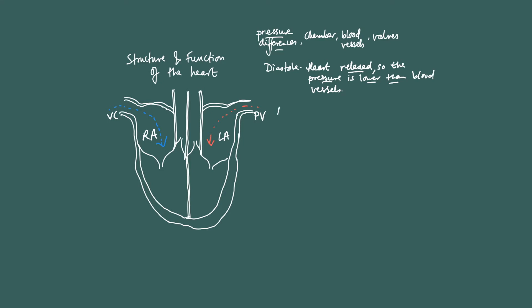Next comes atrial systole. The atria are going to contract. This is happening because of events at the sinoatrial node — we can go over that in a different video, but again there's a reason for that. And because the atria contract, the pressure in the atria is higher than the ventricles. This is a very important point — it's going to explain all the rest of the events.